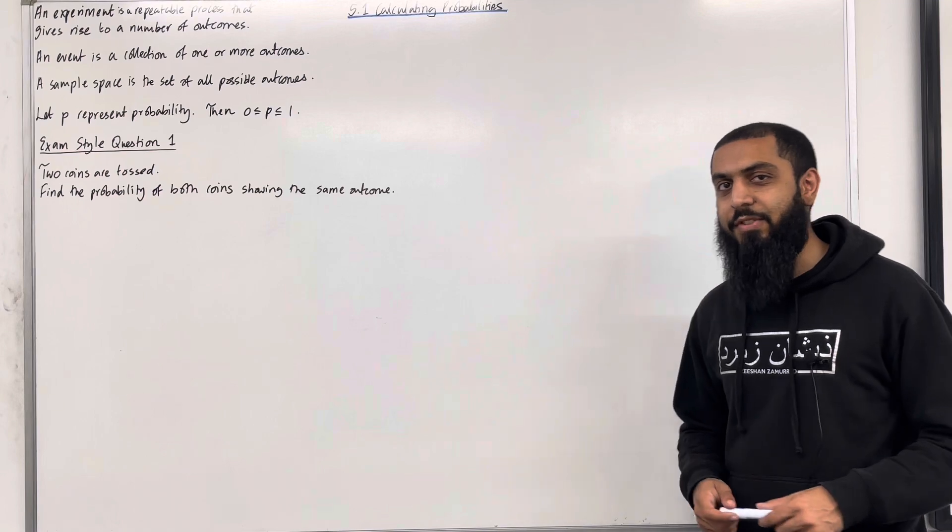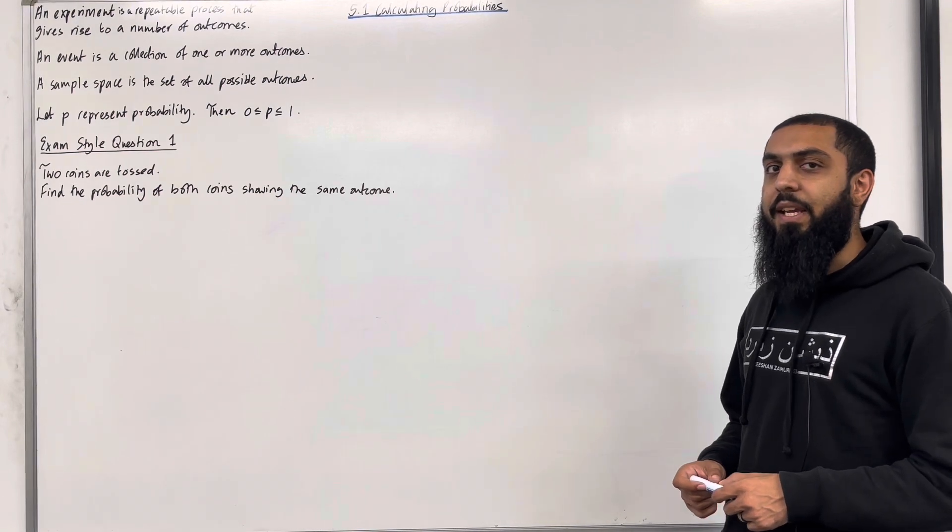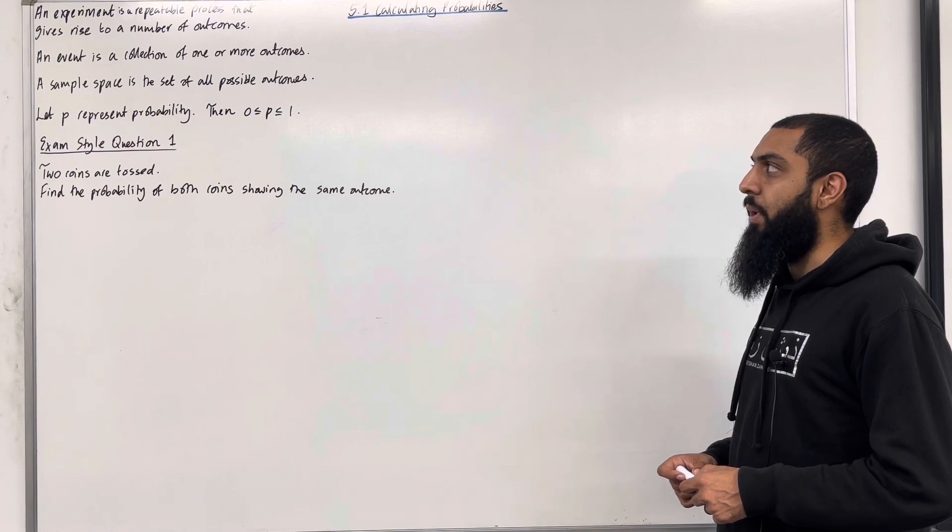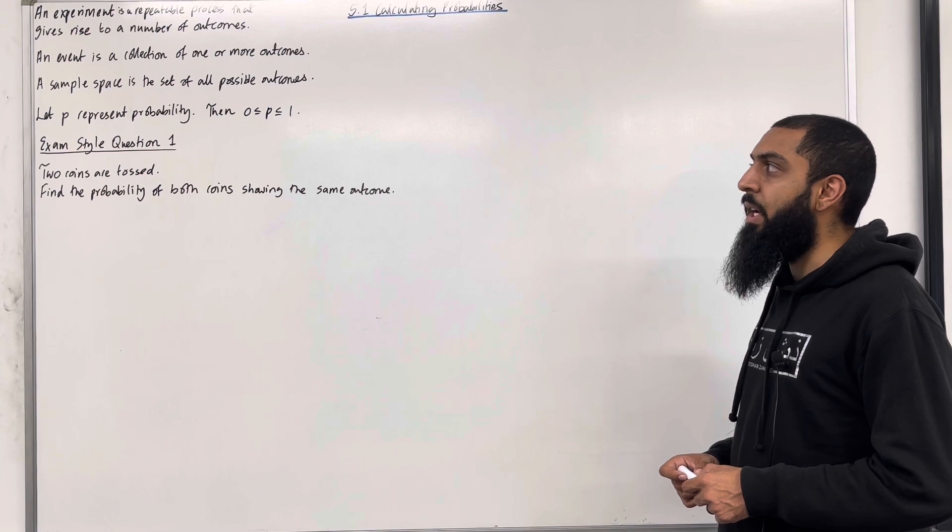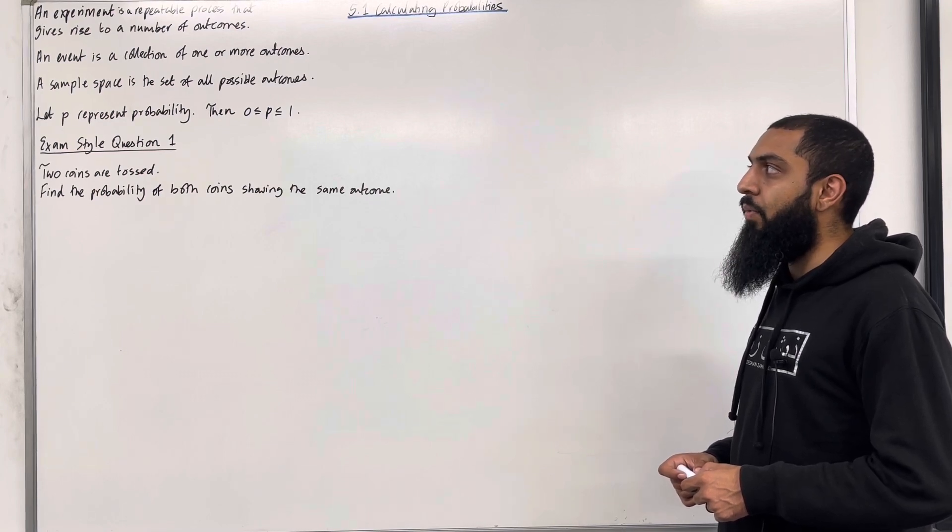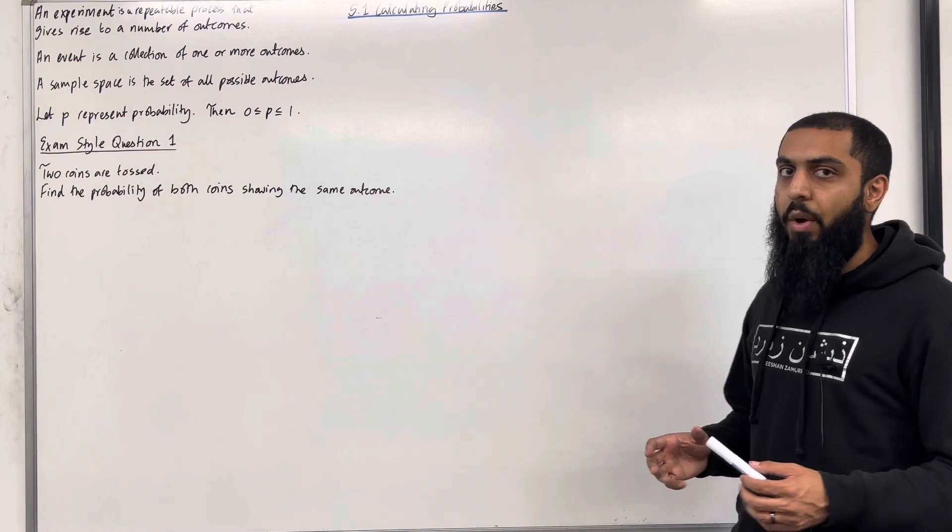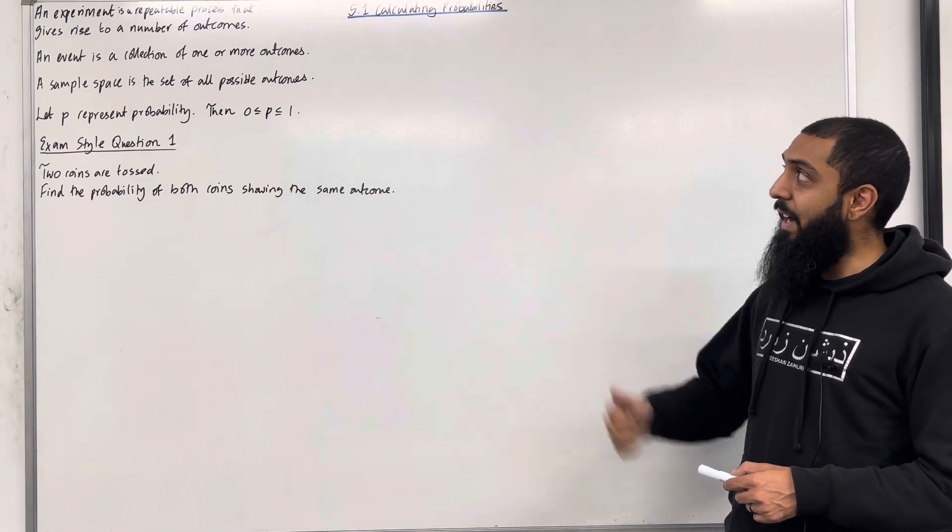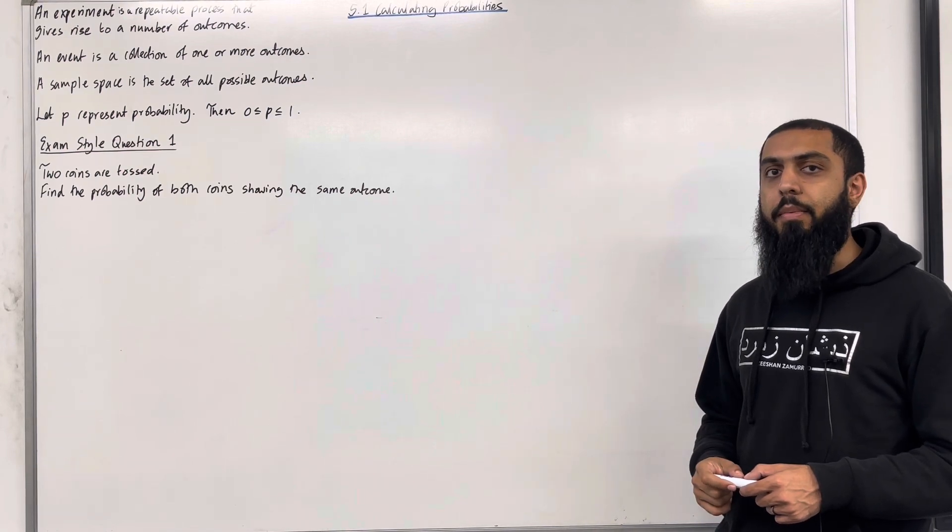Let's have a look at the key facts of this section, which is basically key definitions. An experiment is a repeatable process that gives rise to a number of outcomes. An event is a collection of one or more outcomes. A sample space is a set of all possible outcomes. Let P represent probability. We know that P is more than or equal to 0, but less than or equal to 1. These are the key facts of 5.1 calculating probabilities.